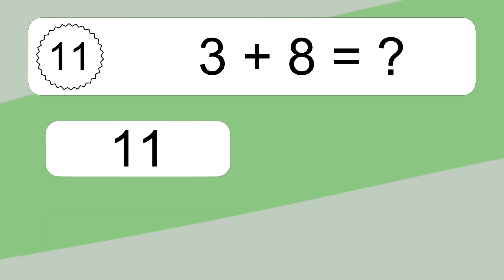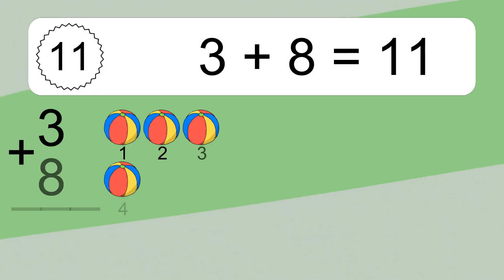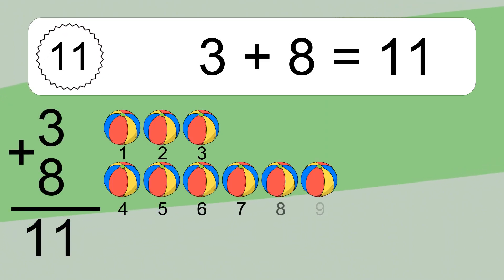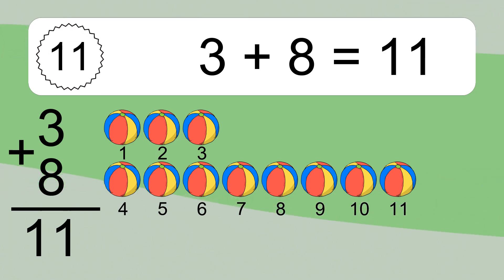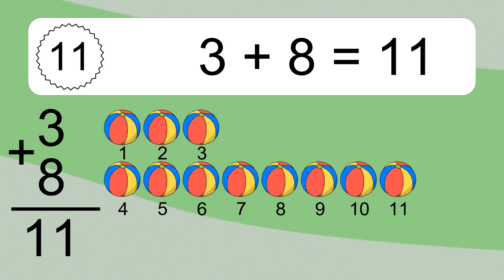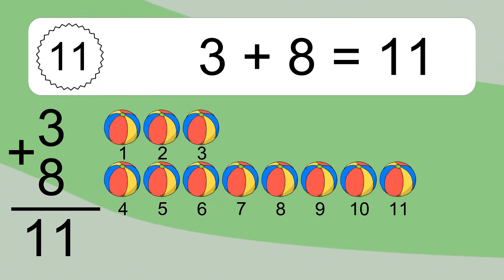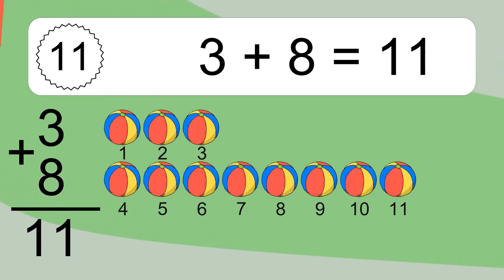3 plus 8 equals what? 3 plus 8 equals 11. Let's count it: 1, 2, 3, 4, 5, 6, 7, 8, 9, 10, 11.